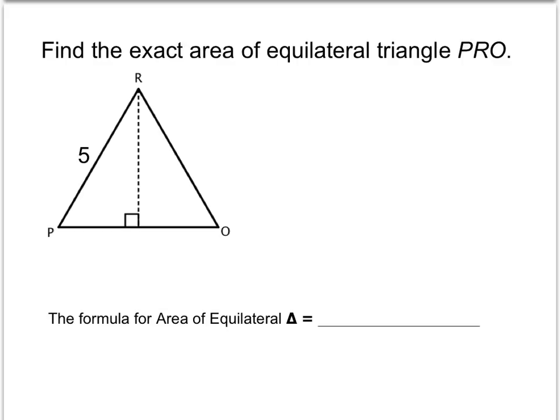Here we want to find the area of an equilateral triangle. If one side length is 5, PR, then all side lengths are 5.